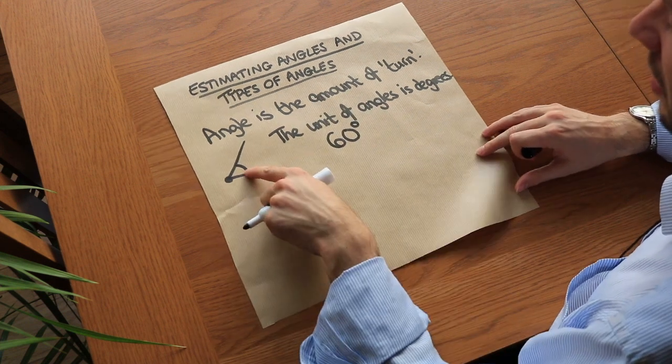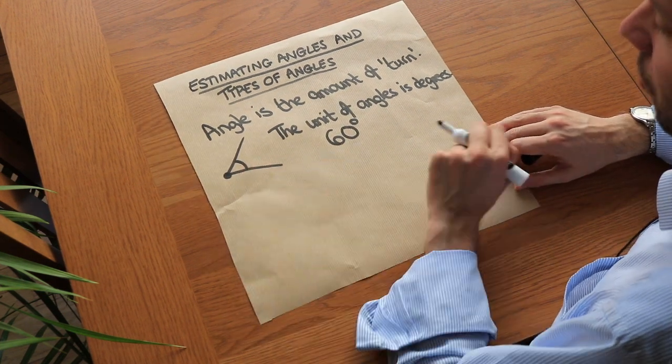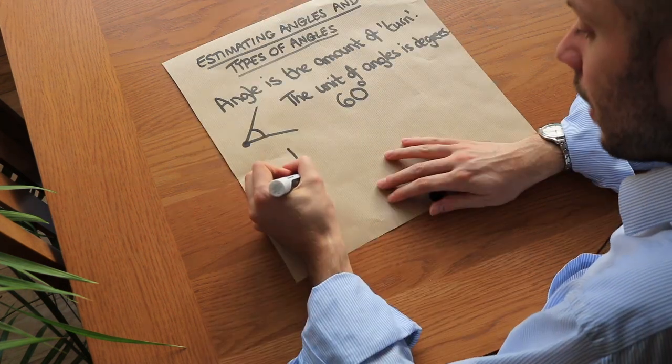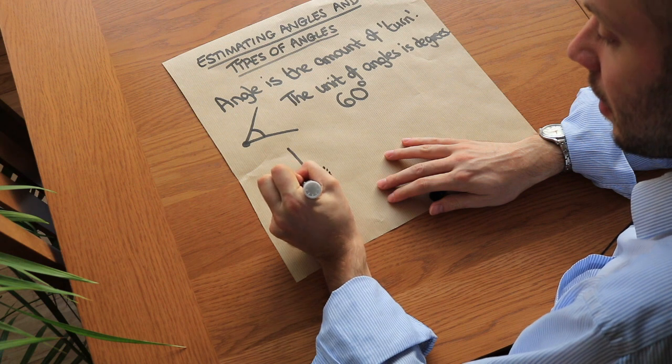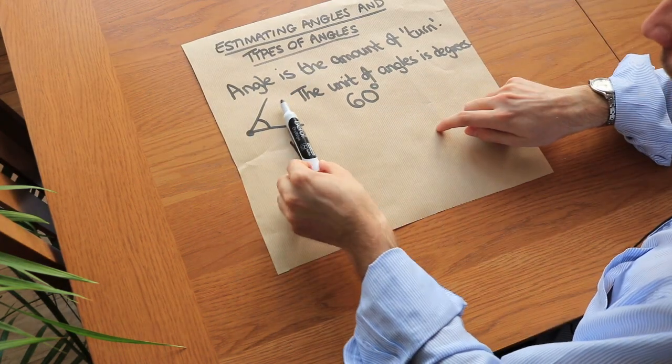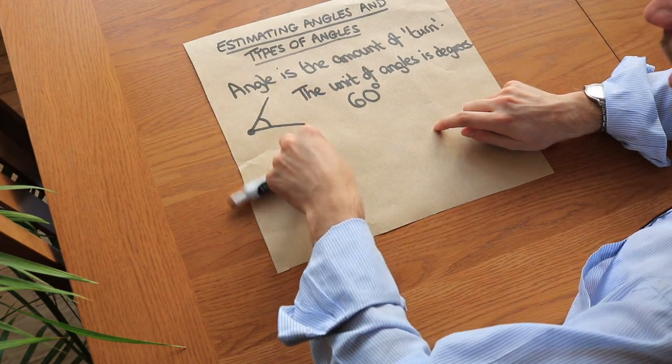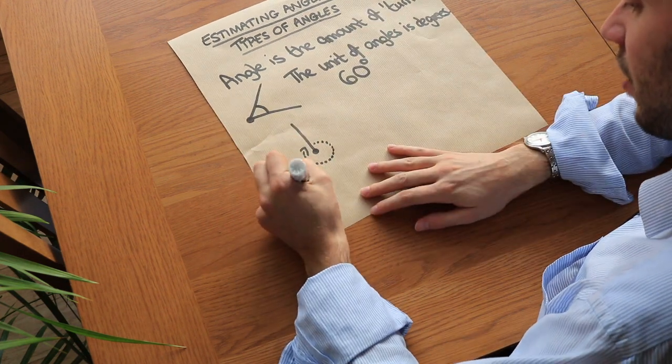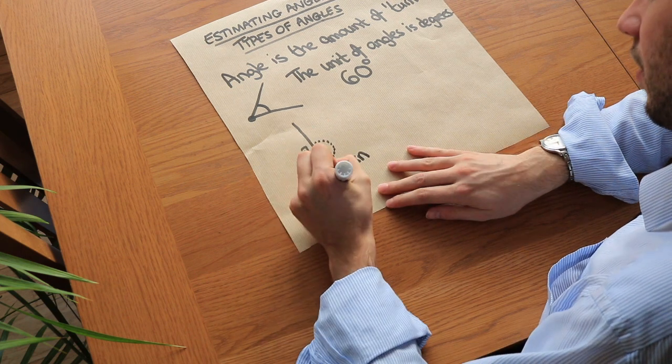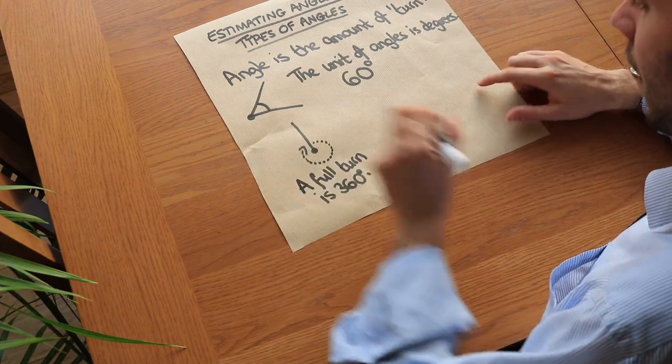Now how would you actually estimate what this angle is? If you measure the angles around a point, then a full spin - imagine you're standing here facing this way and you did a full turn - we say that is 360 degrees. So a full turn is 360 degrees.